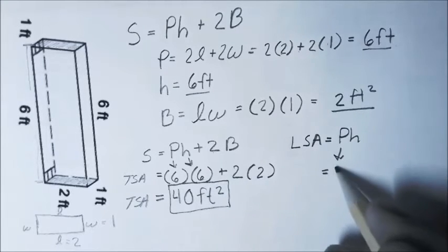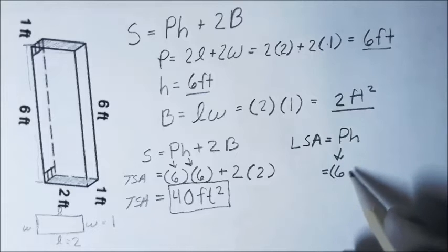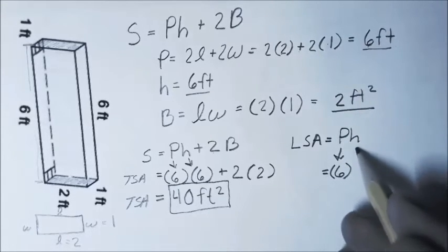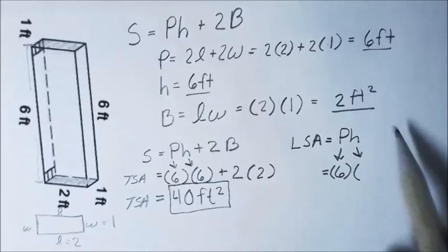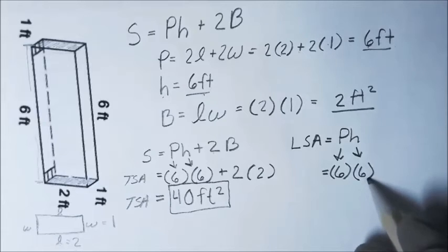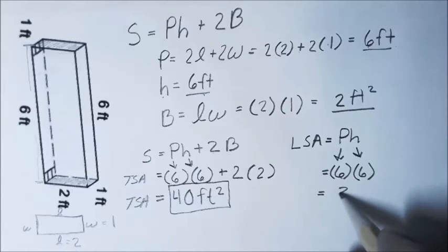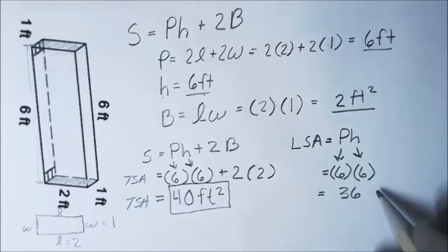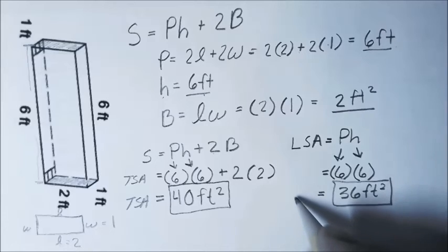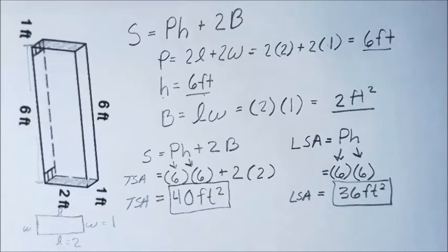We're going to put in a 6, which is our perimeter, and then for our h I'm going to put in another 6, which is our height. 6 times 6 gives me 36, so it's 36 feet squared. That would be our lateral surface area.